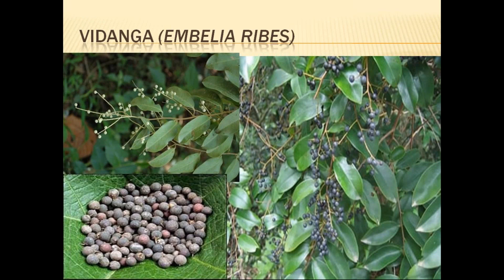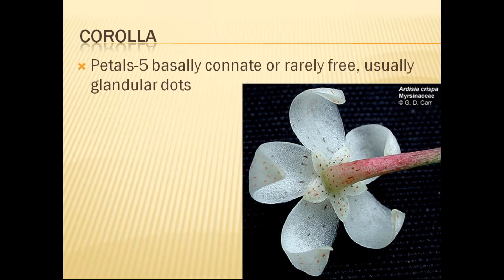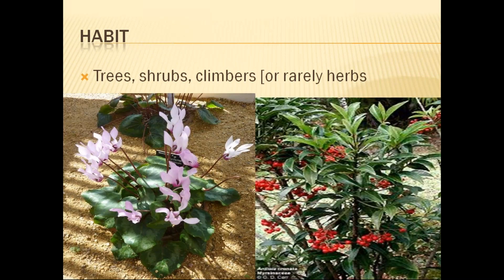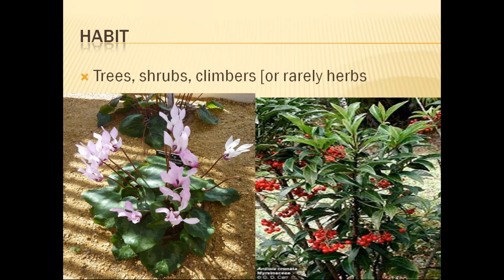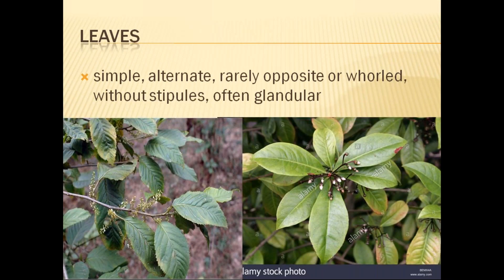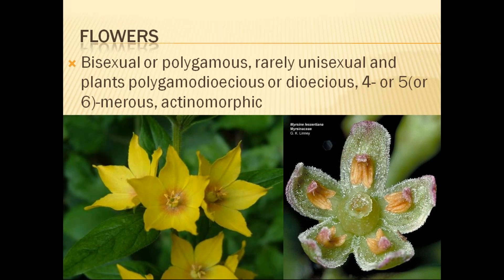This is Myrsinaceae family. Very simple, opposite, coriaceous leaves are seen. The flower arrangement is in a racemose inflorescence. Generally they are trees or shrubs. The trees have simple alternate, and rarely opposite leaves, with glandular dots. The inflorescence is generally racemose axillary. Flowers are bisexual, tetra- or pentamerous, and actinomorphic — that is a very important characteristic of this family.